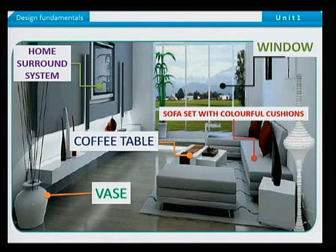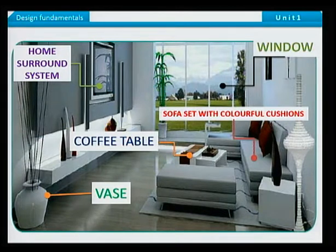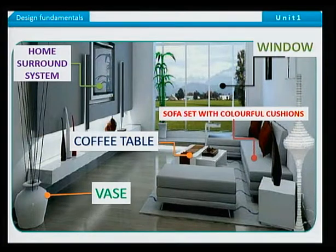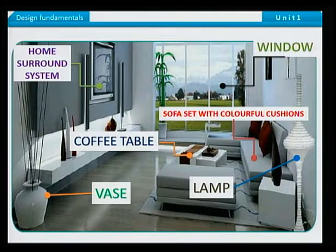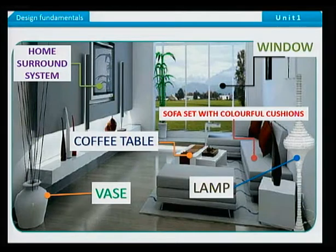Now, the sofa set has colorful cushions. This provides comfort while spending hours there. Last, but not the least, we have a decorative lamp. This is used as a decorative piece or can be used as a lamp at night.